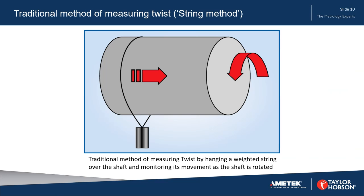So how do we measure twist? The traditional method is to measure twist by hanging a weighted string over the shaft and monitoring its movement as the shaft is rotated. If there is no twist present, the weight won't move. If twist is present, the weight will move in one direction or the other, dependent upon the rotational direction and the nature of the twist.